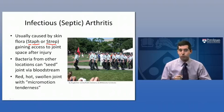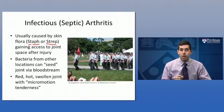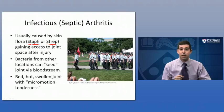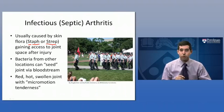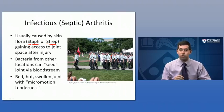Usually the main findings in infectious or septic arthritis are a red, hot, swollen joint with what's called micromotion tenderness. Micromotion tenderness, or MMT, refers to any movement of this joint — even just a couple of degrees — causing really significant pain for the patient. They do everything they can to avoid any movement at that joint, and will often describe that even the little bounces on the road during their drive to the hospital cause really significant pain.